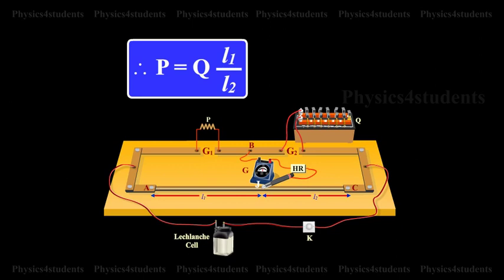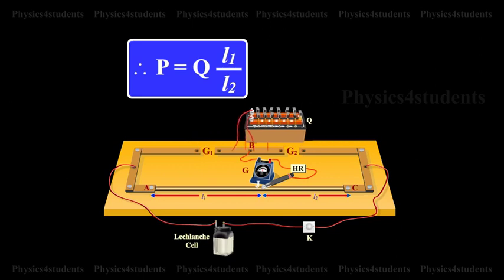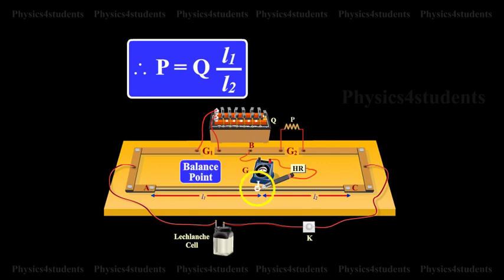This error can be eliminated if another set of readings is taken with P and Q interchanged and the average value of P is found, provided the balance point J is near the midpoint of wire AC.